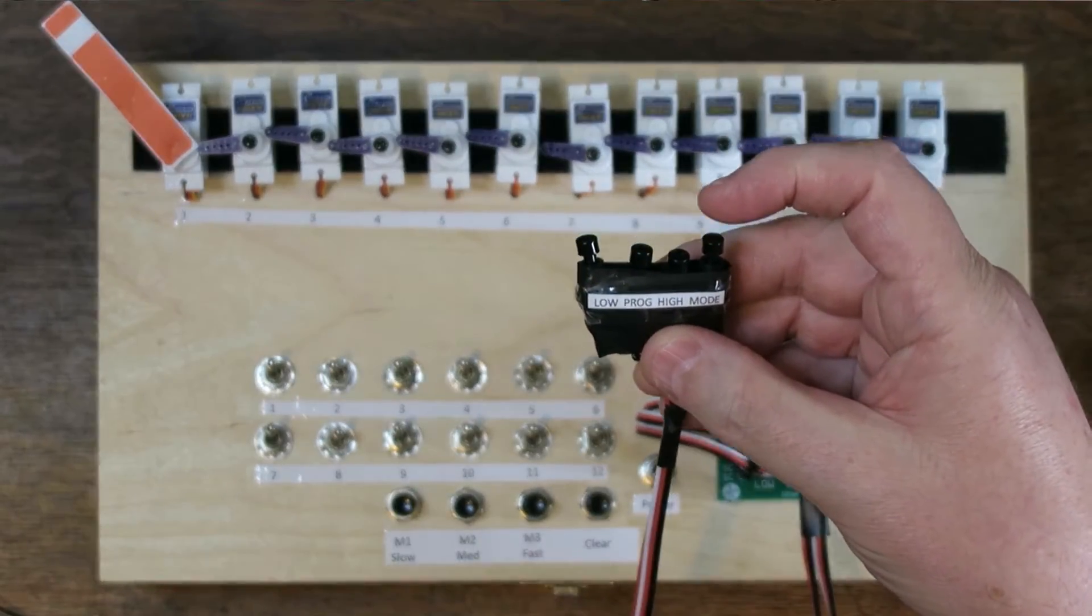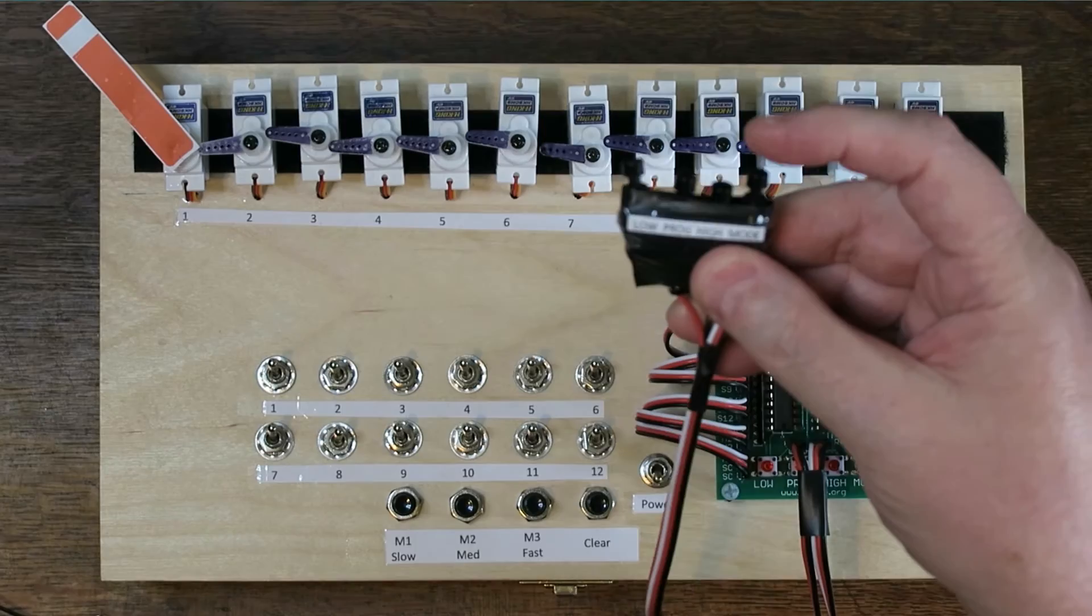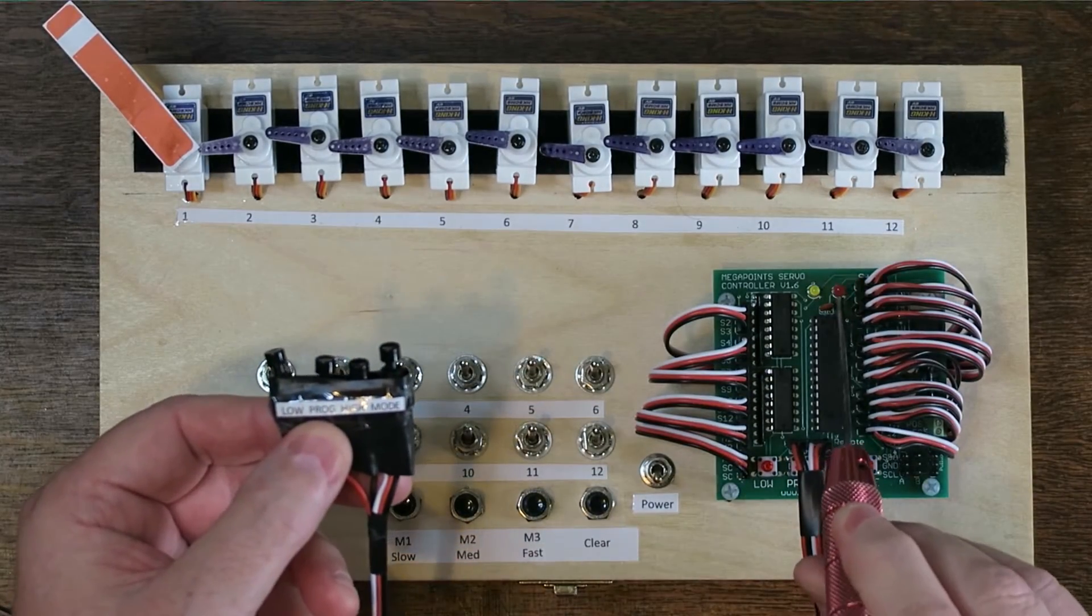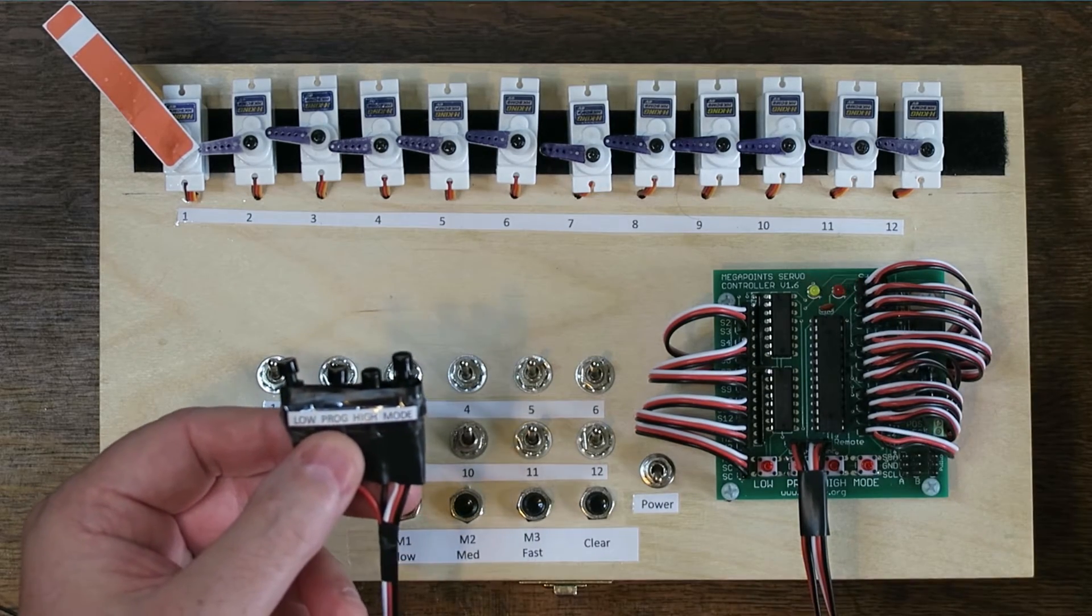Let's change the programming of the first servo. We'll turn it from mode one to three. Now you can see the red light is flashing three times because I've set it to a semaphore.